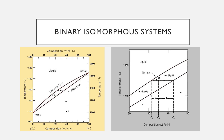Each region is defined by the phase or phases that exist over the range of temperatures and compositions delimited by the phase boundary lines. The liquid L is a homogeneous liquid solution of copper and nickel. The alpha phase is a substitutional solid solution with an FCC crystal structure. At temperatures below about 1080°C, copper and nickel are mutually soluble in all compositions. This complete solubility is explained by both having the same FCC crystal structure, nearly identical atomic radii, electronegativities, and similar valences. The copper-nickel system is termed isomorphous because of this complete liquid and solid solubility.